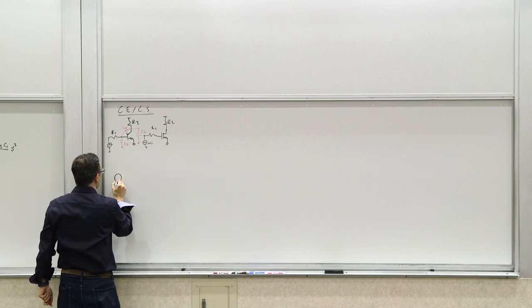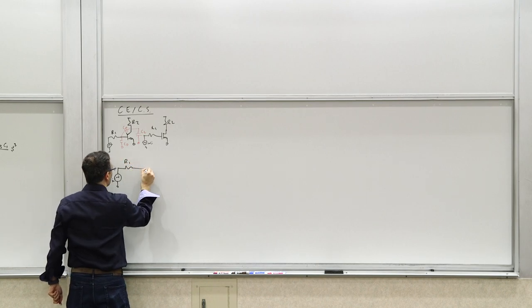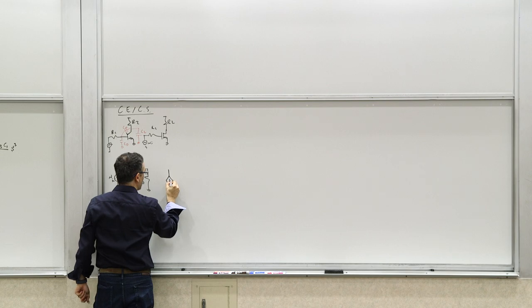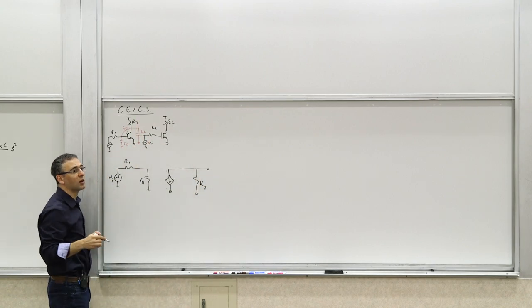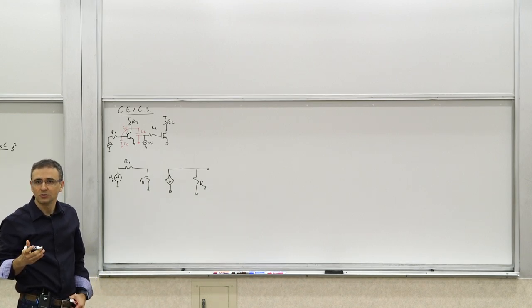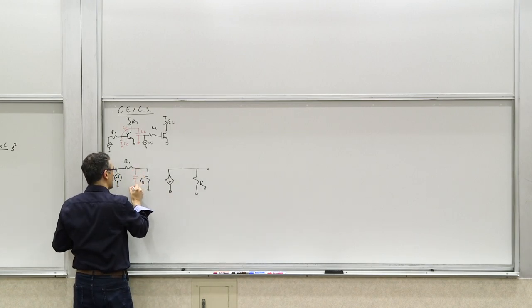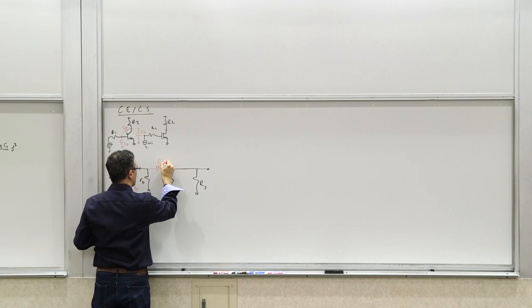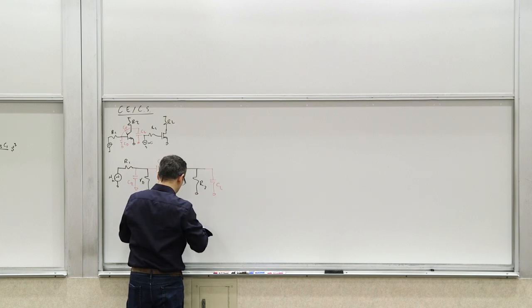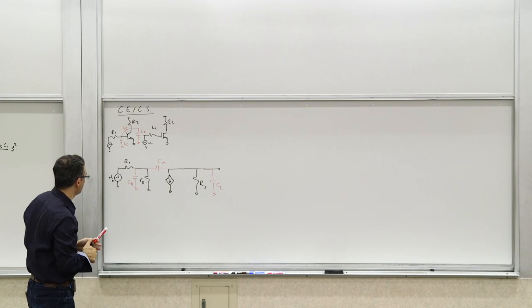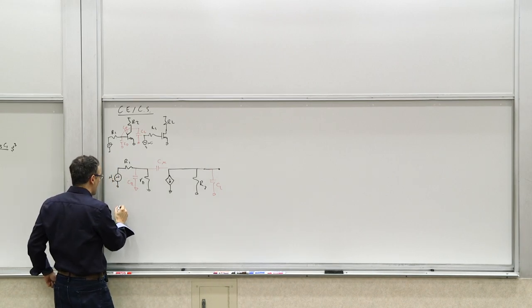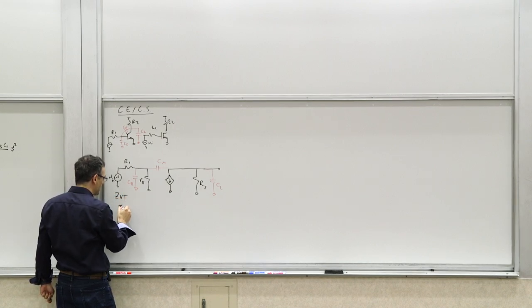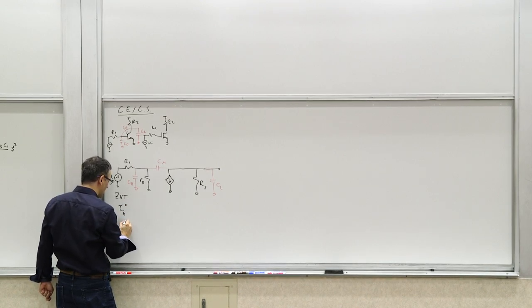Let's write the small signal model. We have V_in, R1, R_pi. For this one, the hybrid-pi model works better when there's no degeneration in the emitter or source. Then you have R2. I'm not showing R_O because if there is an R_O, we can absorb it into R2. So there's C_pi here, C_mu here, and C_L here. We know we have the capacitive loop between those three capacitors. The time constants — let's start with the ZVTs, the first batch: tau_pi_zero, tau_mu_zero, and tau_L_zero.